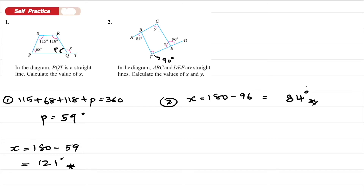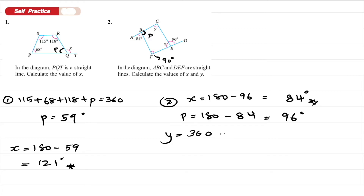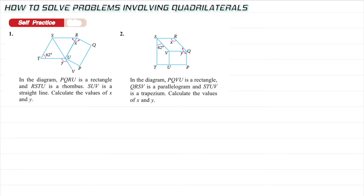To get y, we first find the interior angle P. P = 180 − 84 = 96 degrees. Then using the quadrilateral angle sum: y = 360 − 96 − 90 − 84 = 90 degrees.